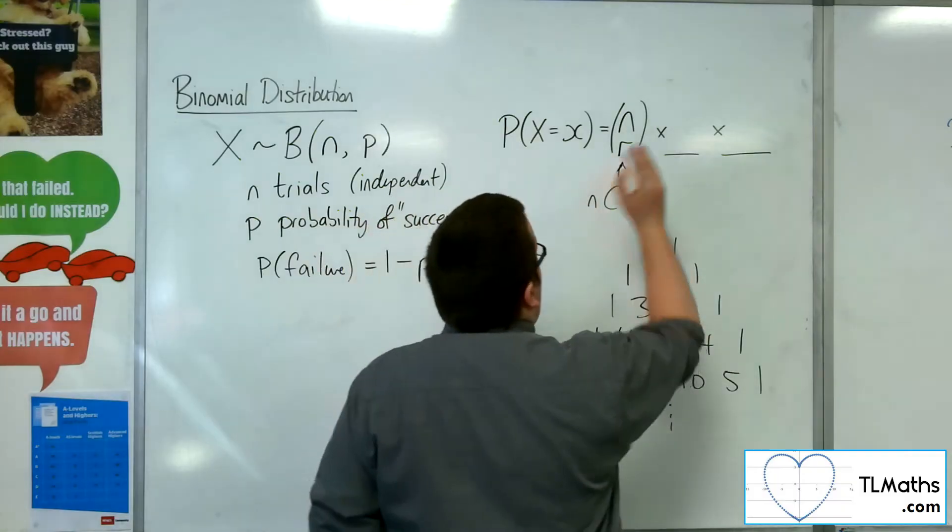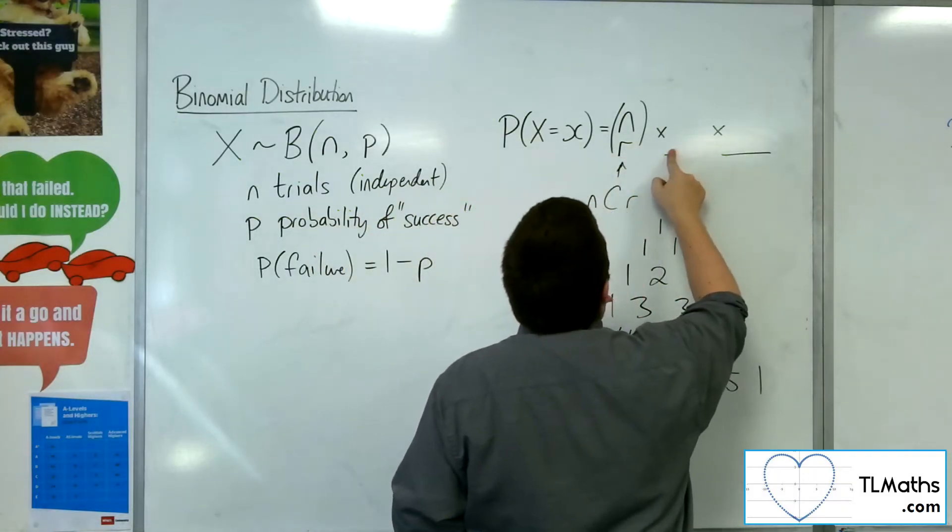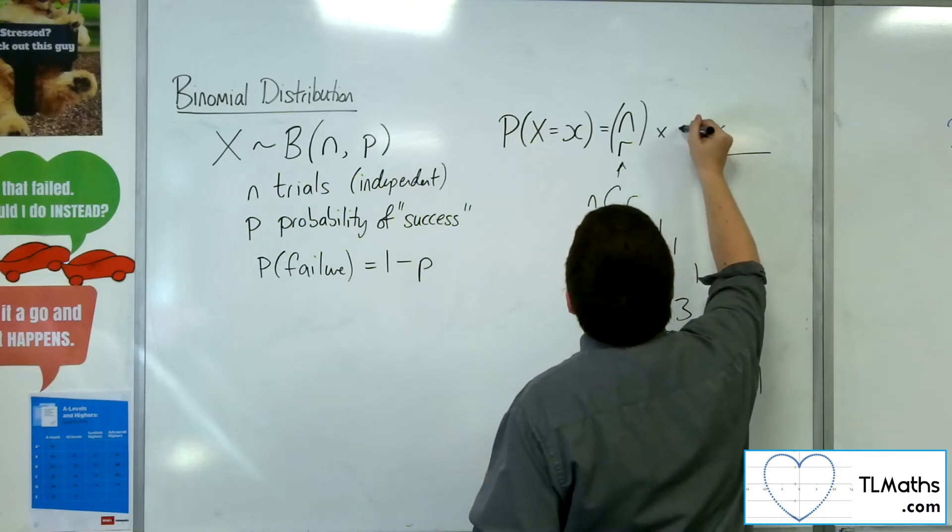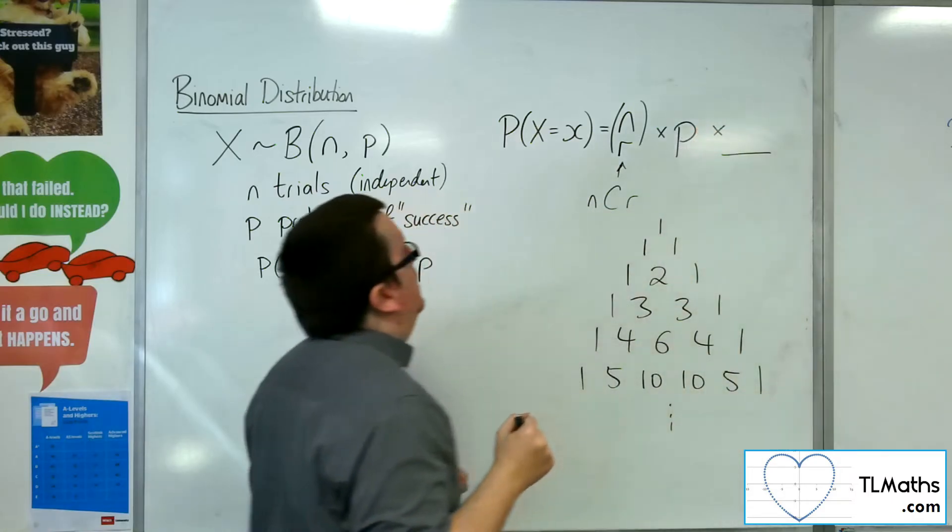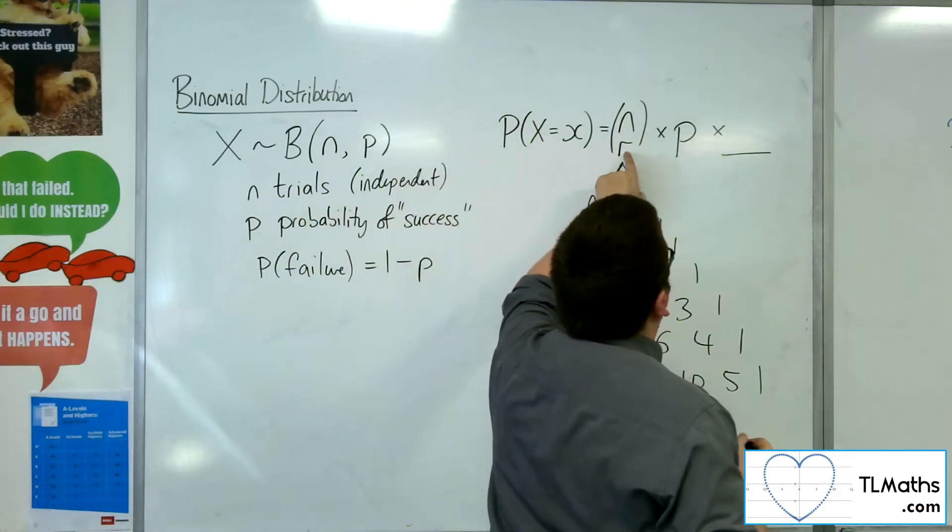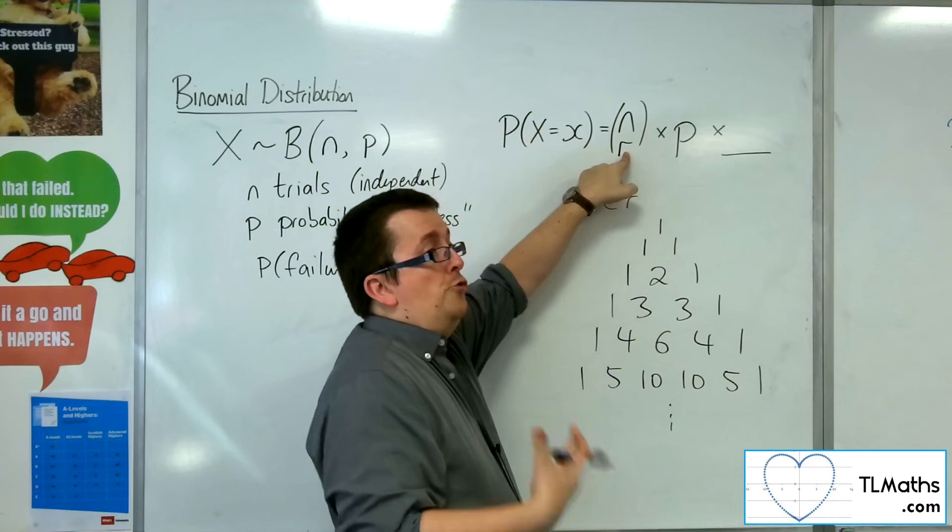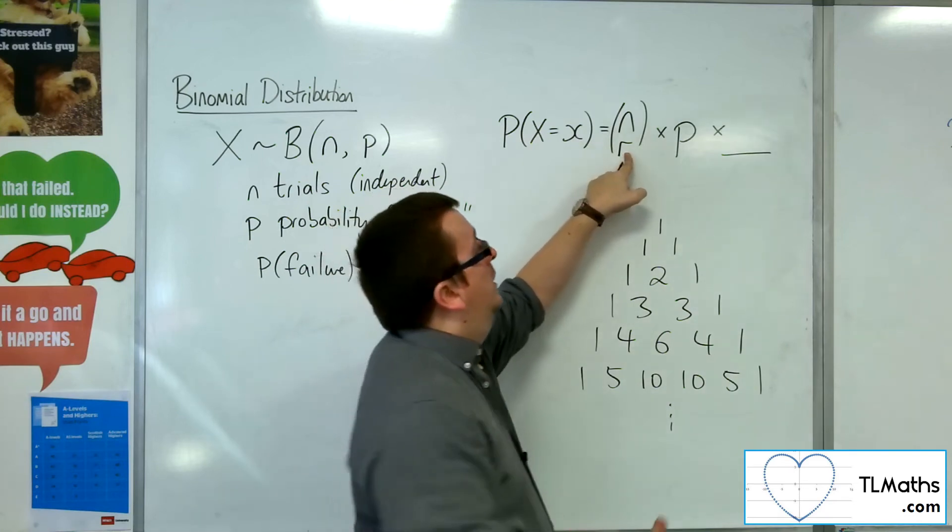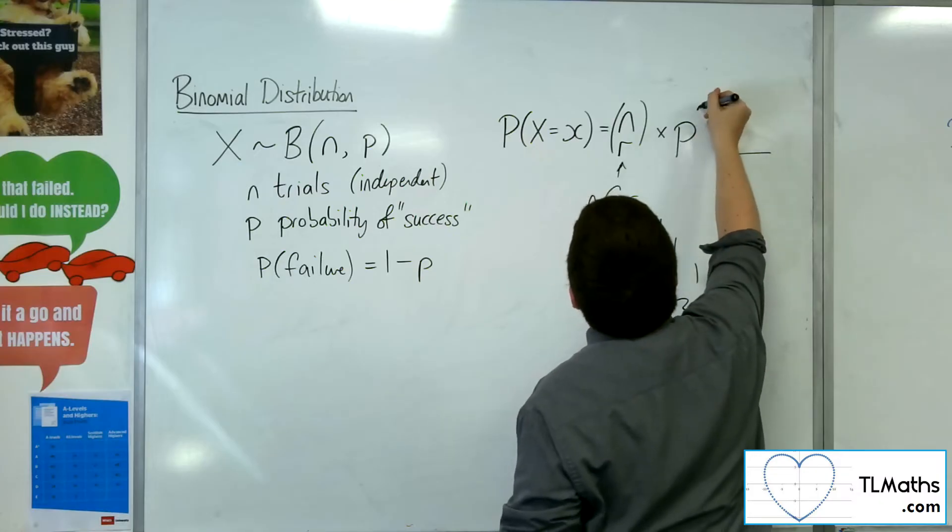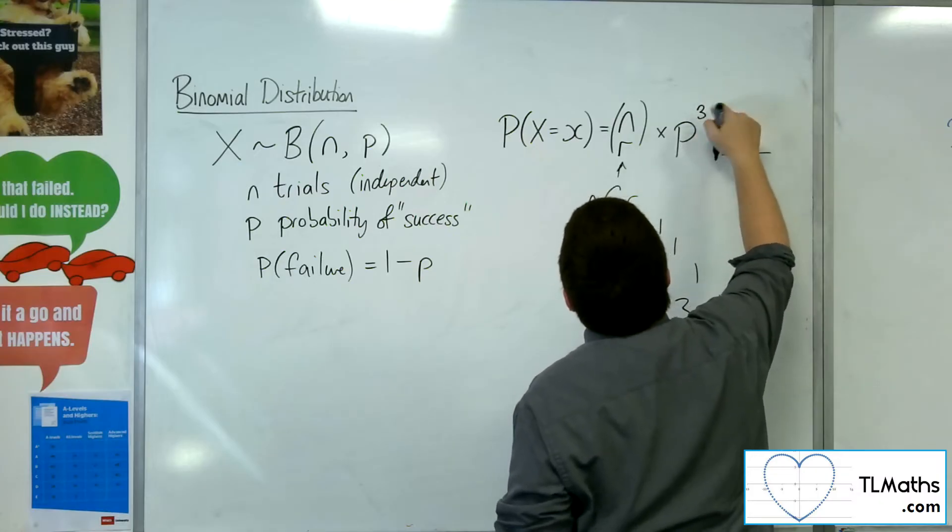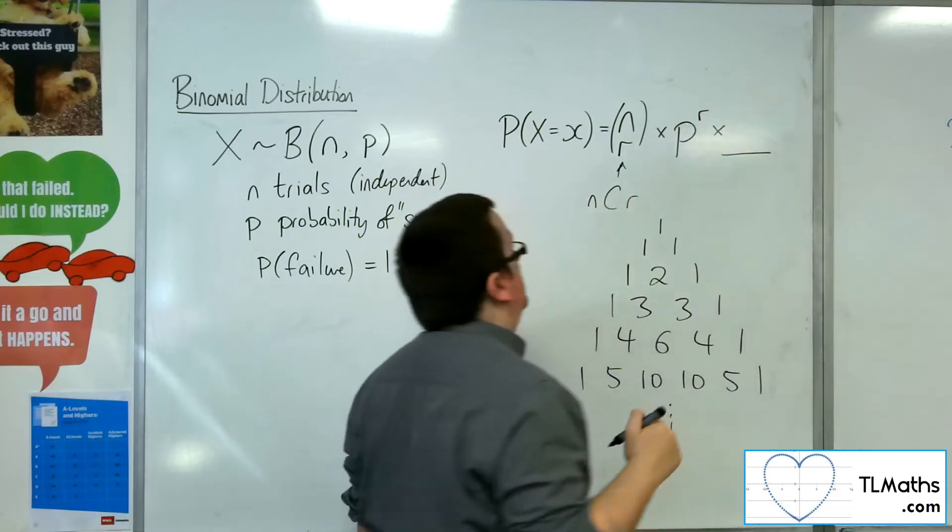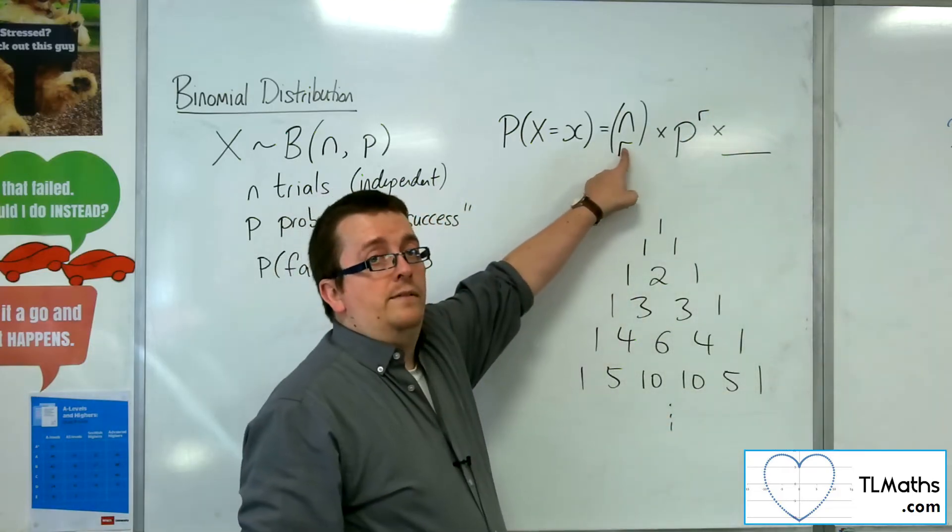Now the next bit is how many times you want the probability of success to appear. So if you've got n trials and you want three sixes to appear, then r is six. So you'll want the probability of sixes to appear happening three times. So this number here is r, the same number that we have there.